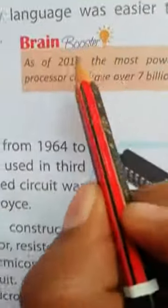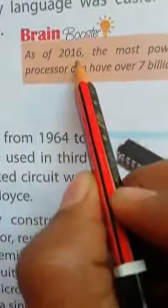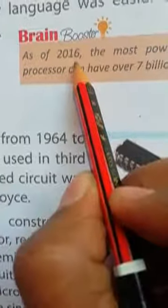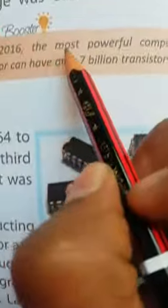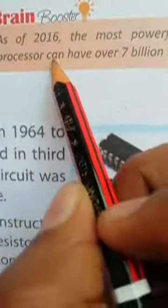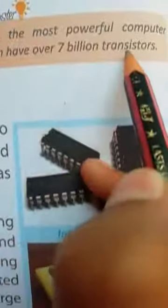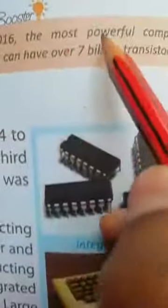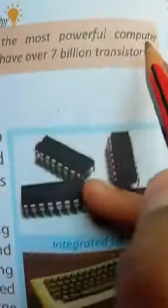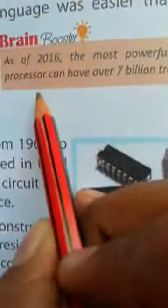Brain booster. As of 2016, 2016 में, the most powerful computer processor can have over 7 billion transistor. 2016 के अनुसार, the most powerful computer सबसे अधिक पावरफुल कंप्यूटर.